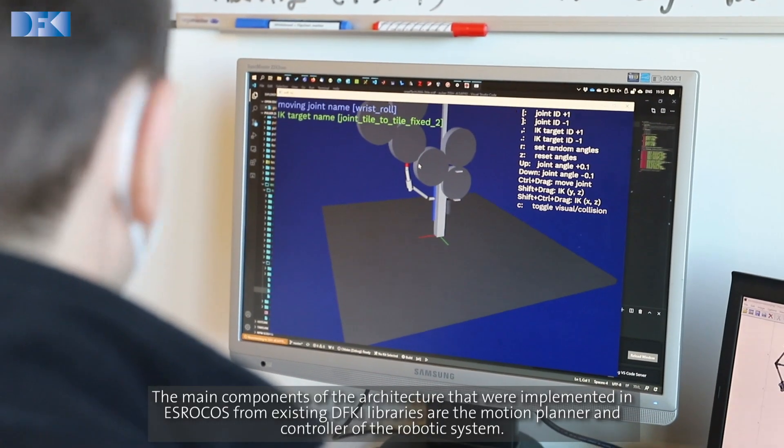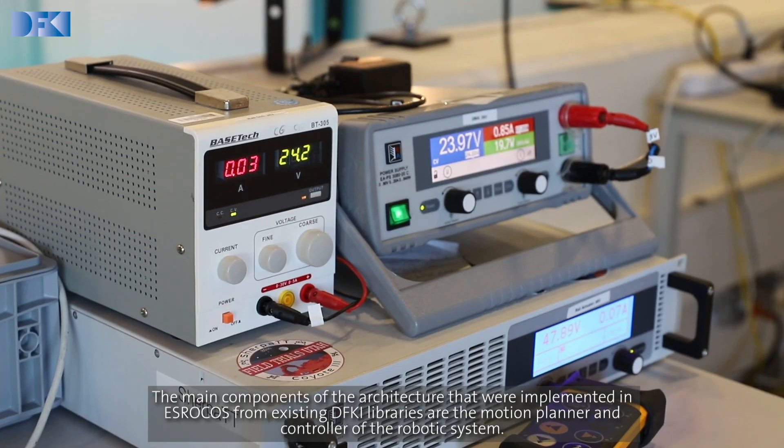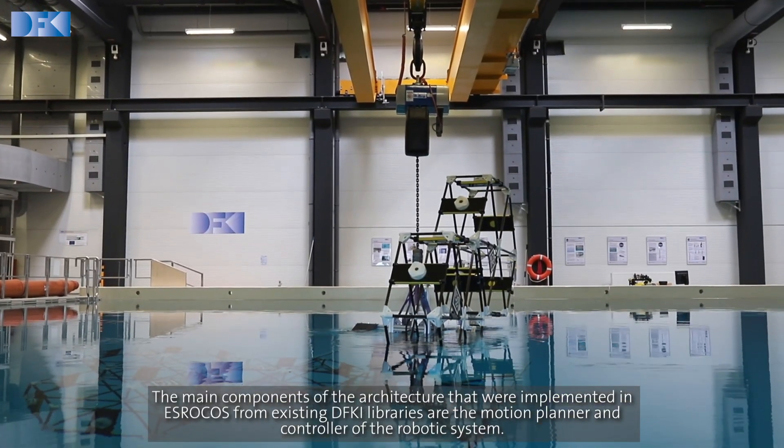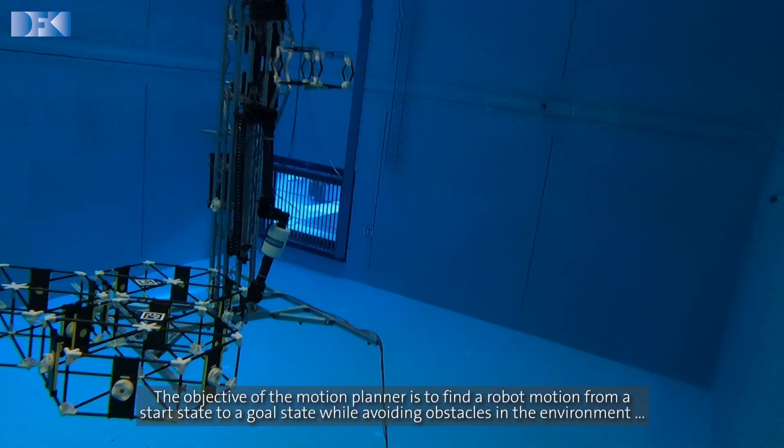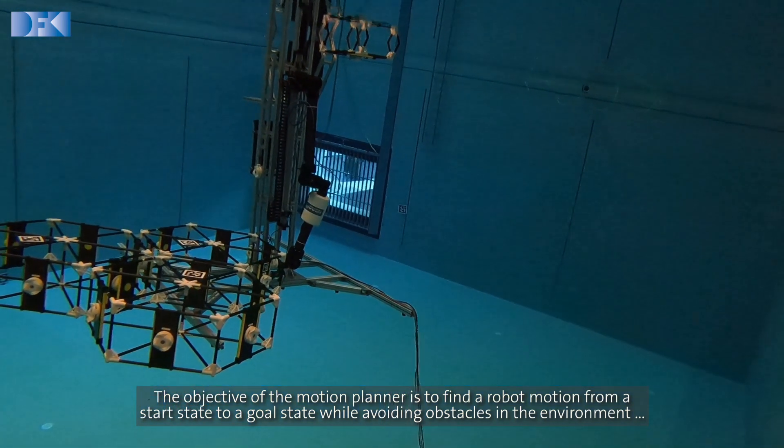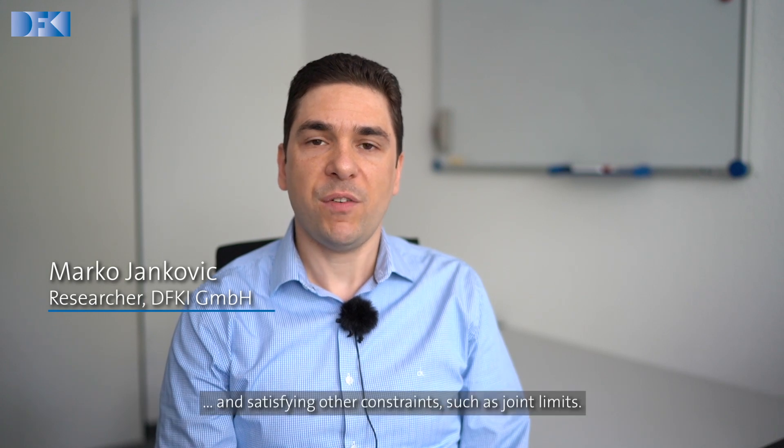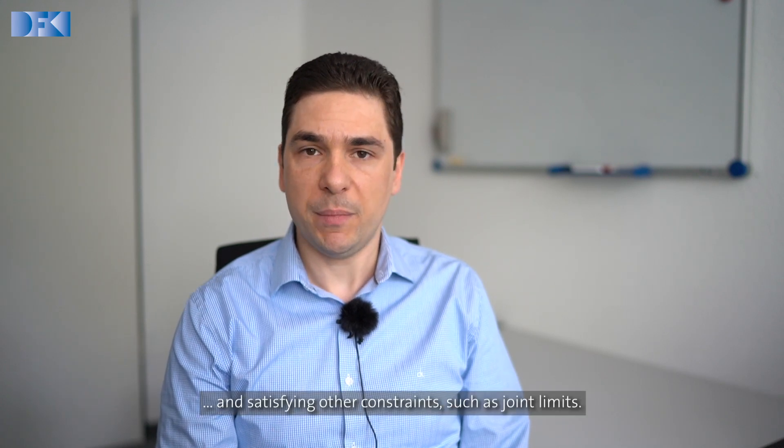The main components of the architecture that were implemented in ESROCOST from existing DFKI libraries are the motion planner and the controller of the robotics system. The objective of the motion planner is to find the robot motion from a start state to a goal state, while avoiding obstacles in the environment and satisfying other constraints such as joint limits.